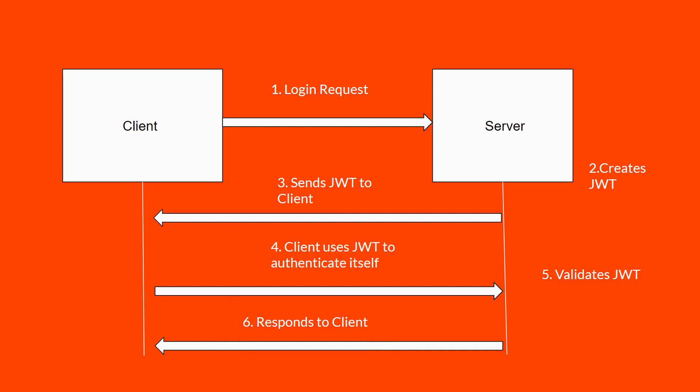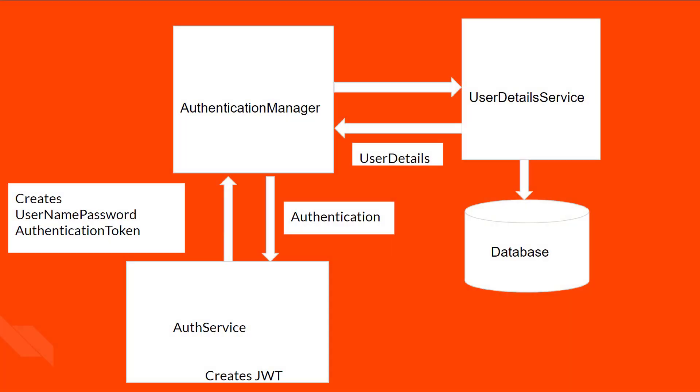Before we dive in and start coding, I'd like to explain how the authentication mechanism works in Spring Security. This is a high-level overview, because there are many hidden functionalities and components used in this authentication mechanism. Because we are implementing this with Spring Security, it is not straightforward — if you are not clear on what you're doing, it's easy to get lost and confused. Here is the diagram showing the high-level flow followed inside our project.